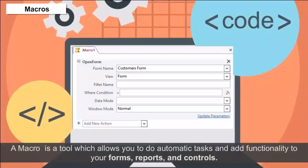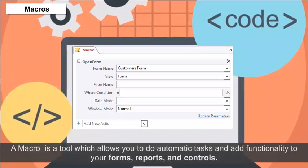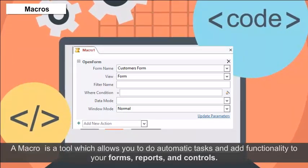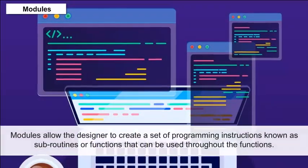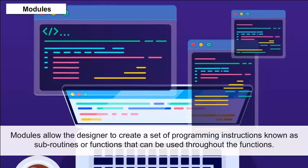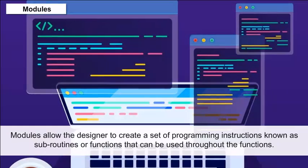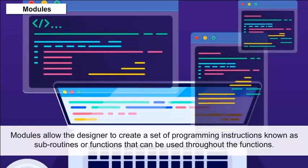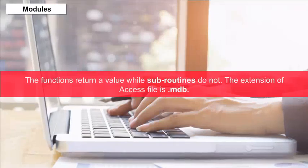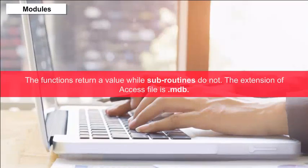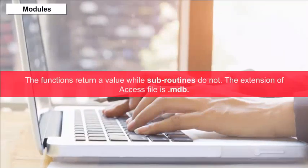A macro is a tool which allows you to do automatic tasks and add functionality to your forms, reports and controls. Modules allow the designer to create a set of programming instructions known as subroutines or functions that can be used throughout the functions. Functions return a value while subroutines do not. The extension of an Access file is .mdb.